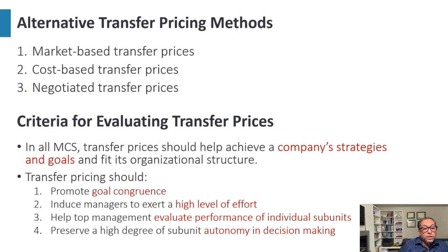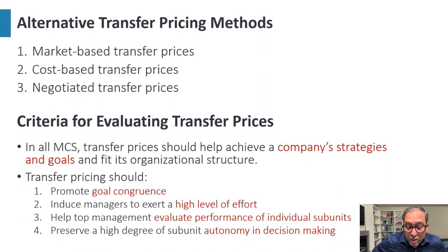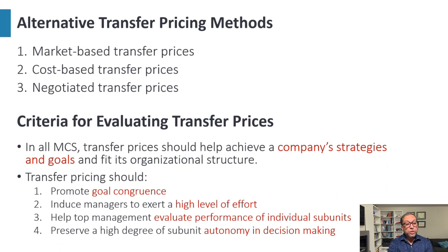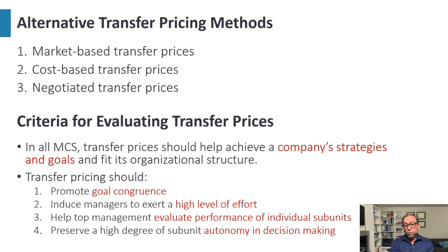There are three different methods used for transfer pricing. The first is market-based transfer pricing, where we transfer from one unit to another according to the market price of that product at that stage of production. The second is cost-based transfer pricing. The third is negotiated transfer prices, where the two subunits negotiate with each other to arrive at a price.